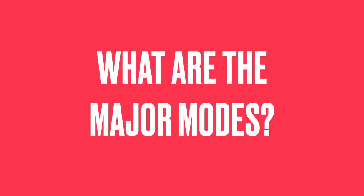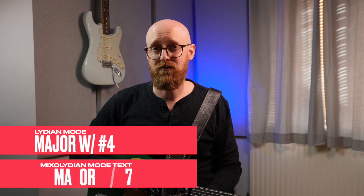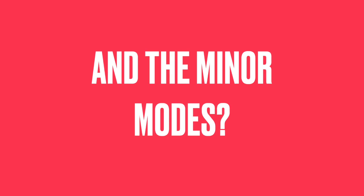So what are the major modes? Ionian is the major scale of course. Then Lydian has a sharp four and Mixolydian has a flat seven. Similarly with the minor modes, you have Aeolian which is a natural minor scale. Then Dorian has a sharp six and Phrygian has a flat two. Locrian is the odd one out because the characteristic note is really the flat five: one, flat three, four, flat five, flat seven. So it's a minor pentatonic scale and you're altering the fifth, which means we're not adding a note, which means it's not hexatonic — it's just got the five notes.